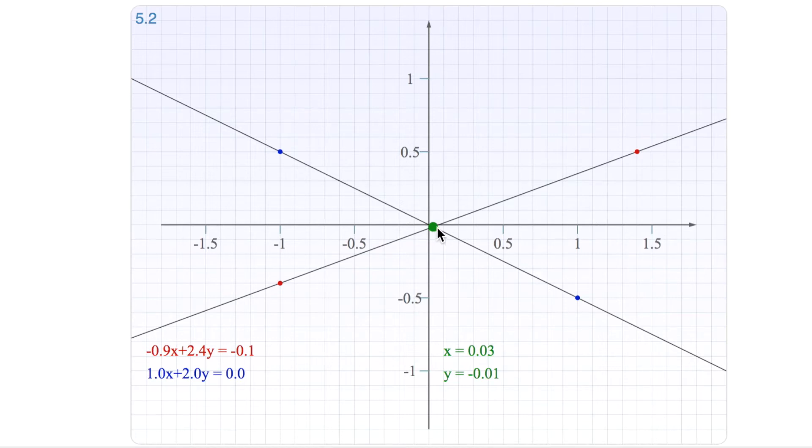So this is the green dot here, and you can see the solution here, x, y, x being 0.03, and y being minus 0.01.